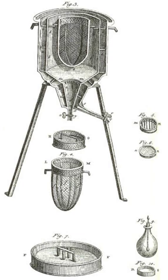A constant pressure calorimeter measures the change in enthalpy of a reaction occurring in solution during which the atmospheric pressure remains constant. An example is a coffee cup calorimeter, which is constructed from two nested styrofoam cups and a lid with two holes, allowing insertion of a thermometer and a stirring rod. The inner cup holds a known amount of a solvent, usually water, that absorbs the heat from the reaction. When the reaction occurs, the outer cup provides insulation.